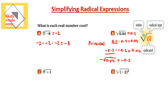If the question says 'find all real number roots,' you write both positive and negative. But if the question says 'what is each real number root,' you write the principal or positive solution. If they want the negative solution, they will write a negative sign outside the radical.